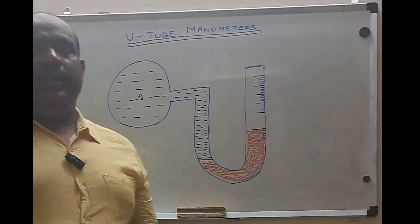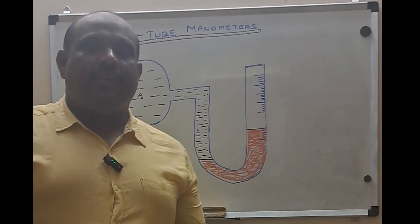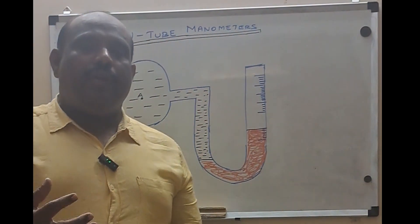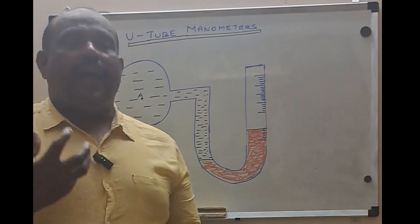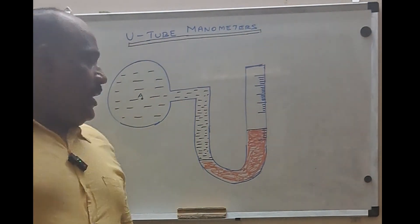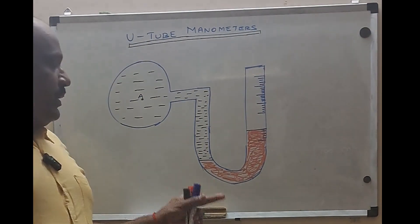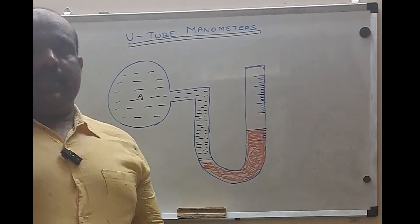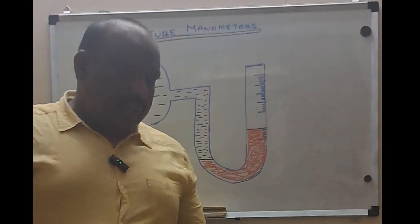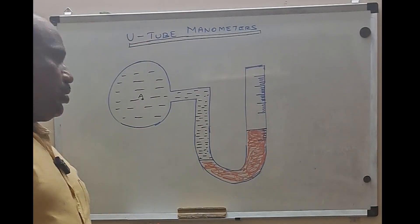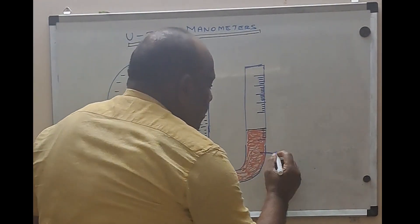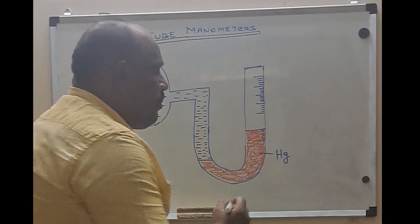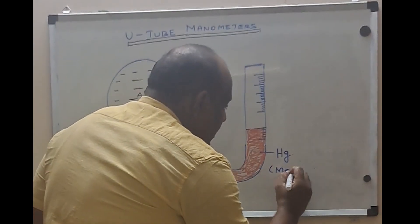Compared to the previous case of the piezometer, where there is only one liquid, here we are going to use another liquid. That liquid is called the measuring liquid, which has been indicated by the reticular marks. Generally, we will use mercury (Hg) as this measuring fluid. The formula for mercury is Hg.